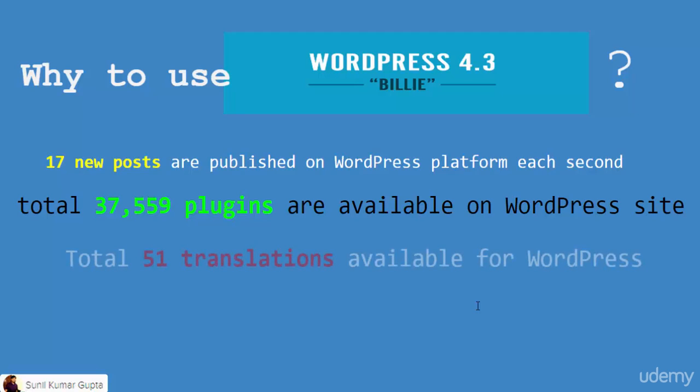There are 51 translations available for WordPress, so you are not restricted to a single language like English. You can create a WordPress website and translate it into any language of your choice. These features make WordPress stand out and make it the most popular content management system.